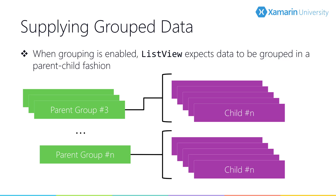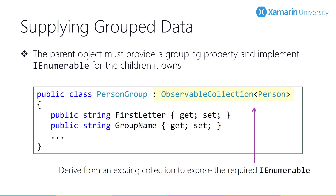The ListView expects a collection of objects where each object is the group header and exposes a collection of child objects. Unlike WPF, you can't specify a child property for the grouped collection — the group header object must implement IEnumerable and return the children when iterated. An easy way to do this is to derive your group object from a collection type like List of T or ObservableCollection of T, and then add the children to the group itself.